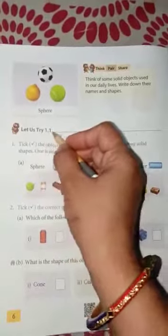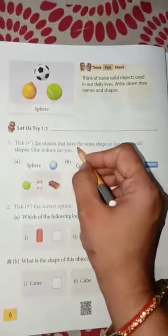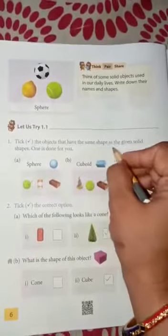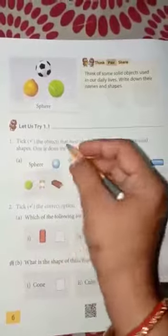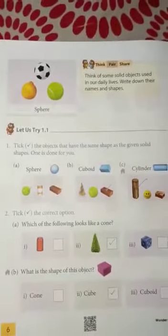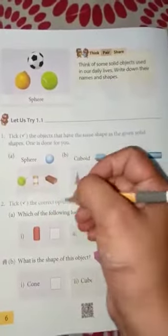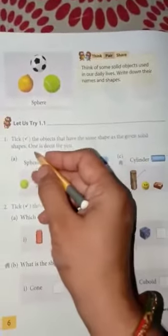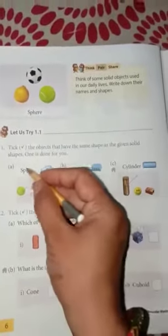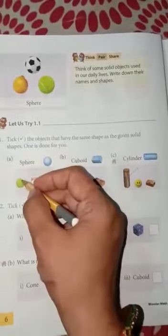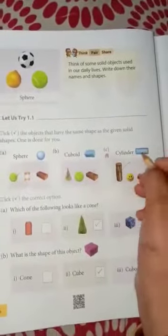Let us try 1.1. Tick the objects that have the same shape as the given solid shapes. One is done for you. Un objects ko tick karna hai jo given shape ke jaisi shape ho. Ek is mein kar ke diya hua hai. Yeh aap ke liye already kiya hua hai. First is sphere. Ball jo humari hoti hai woh sphere jaisi hoti hai. Yeh aap khud se karenge.